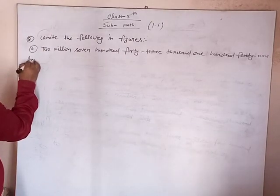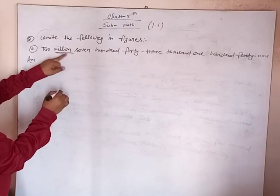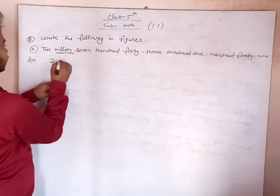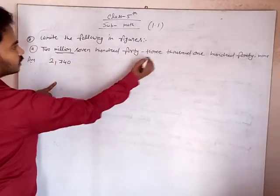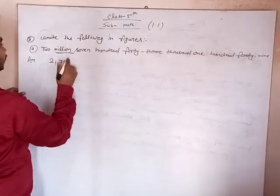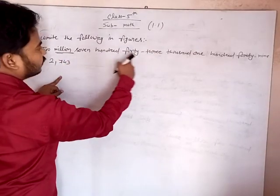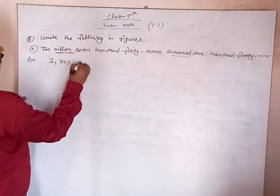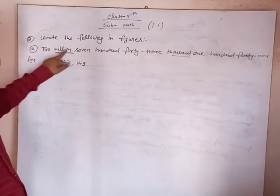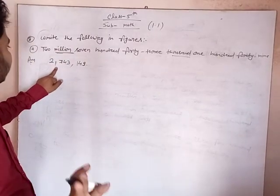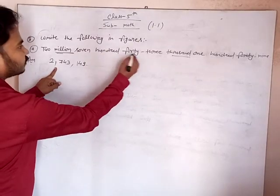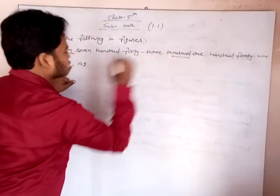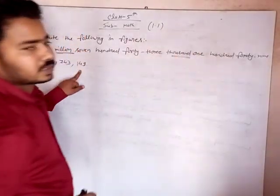Here we see that 2,000,000 plus 743,000 plus 149. So the answer is 2,743,149. Understand?